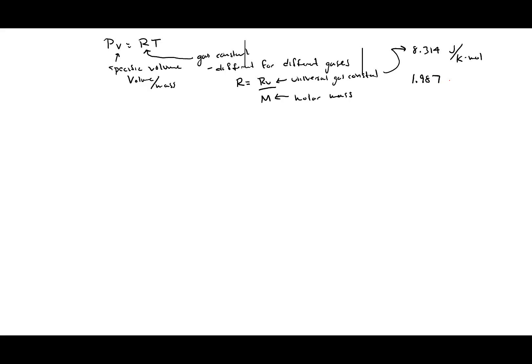Other values include 1.987 kilocalories per kelvin·mole, or 8.205 meters cubed·atmosphere per kelvin·mole. The value you use will depend on what units you have in your problem — you want to use a universal gas constant whose units match those you're already using, otherwise you'll have to do conversions.